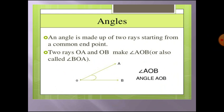So an angle is made up of two rays, OA and OB. This is the example for angles. We can call this angle AOB or angle O.